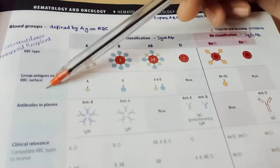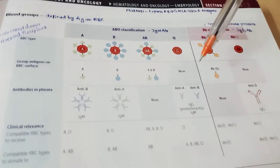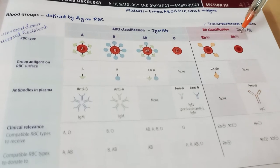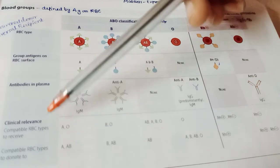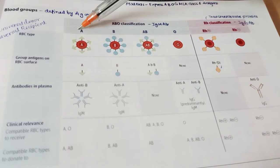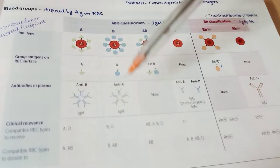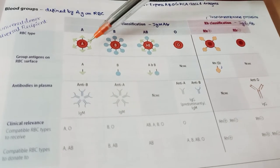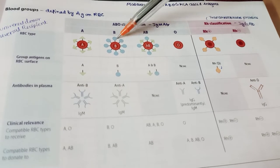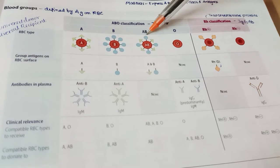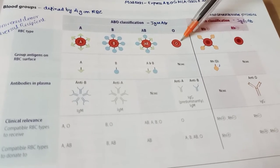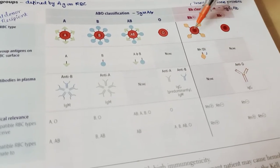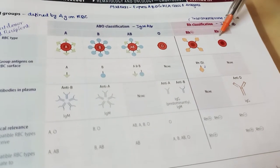In RBC surface antigens: A antigen for type A, B for type B. In Rh classification, Rh positive means expressing the RhD antigen; not expressing it means Rh negative. Antibodies are opposite to the expressed antigen: type A has anti-B, type B has anti-A, type AB has no antibodies, type O has both anti-A and anti-B. Rh positive has no anti-D; Rh negative has anti-D antibody.